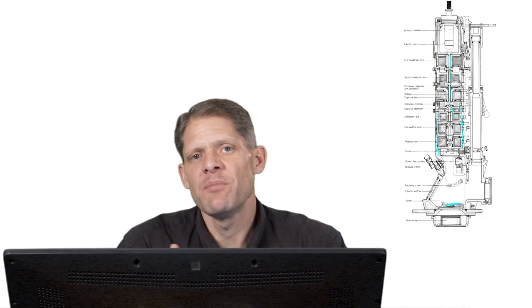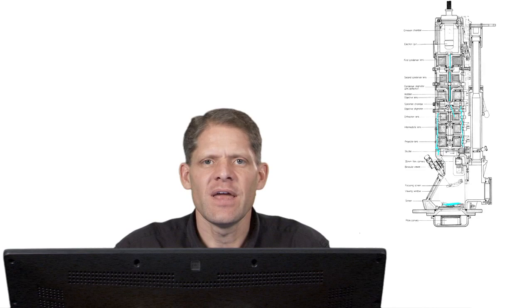This concludes part one: currents, coils, knobs, and names—the basic anatomy of an electron microscope.